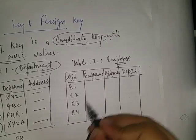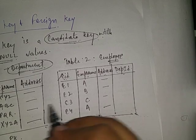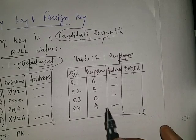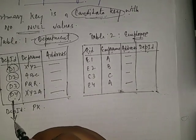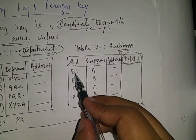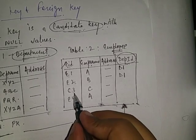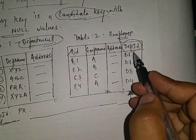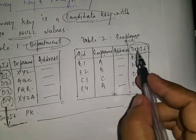Let me fill some random values in this table — just to understand the concept of primary key and foreign key. Now, considering that these two tables are being referenced, that means this department ID is being referenced into the employee table as department ID again. Let us say employee E1 works in department D1, employee E2 also works in department D1, employee E3 works in department D3, and E4 works in department D4.